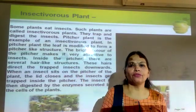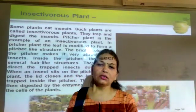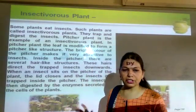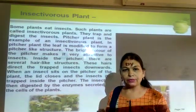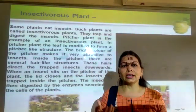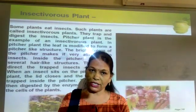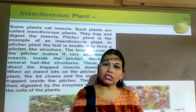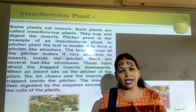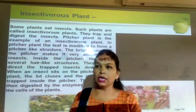Venus flytrap and pitcher plant are examples of insectivorous plants. These plants have a structure with a jelly-like substance present on the surface of the leaf, and thorns are there on the surface of the leaf.